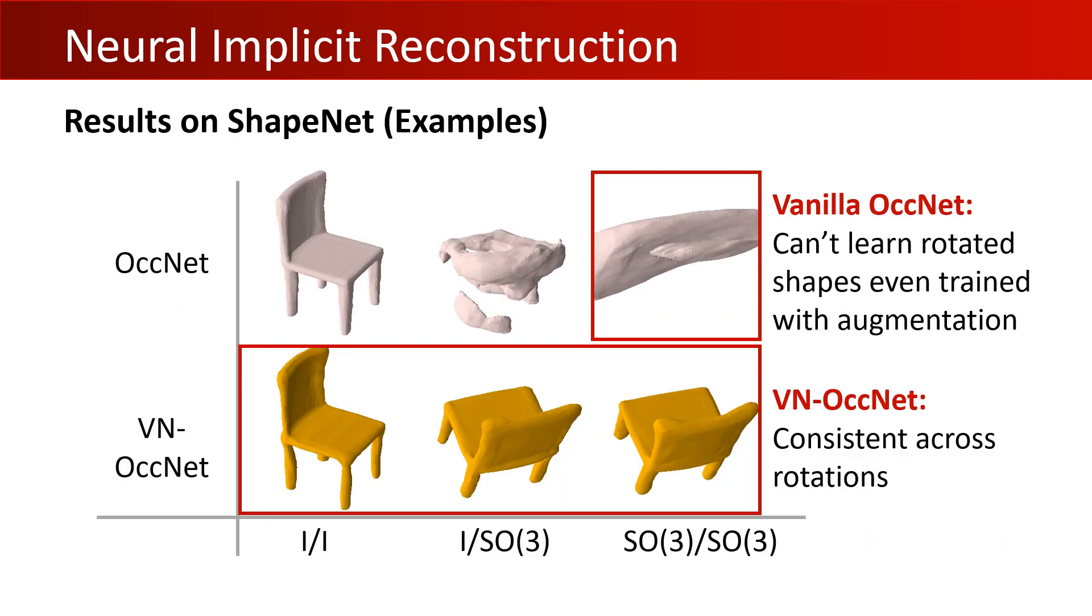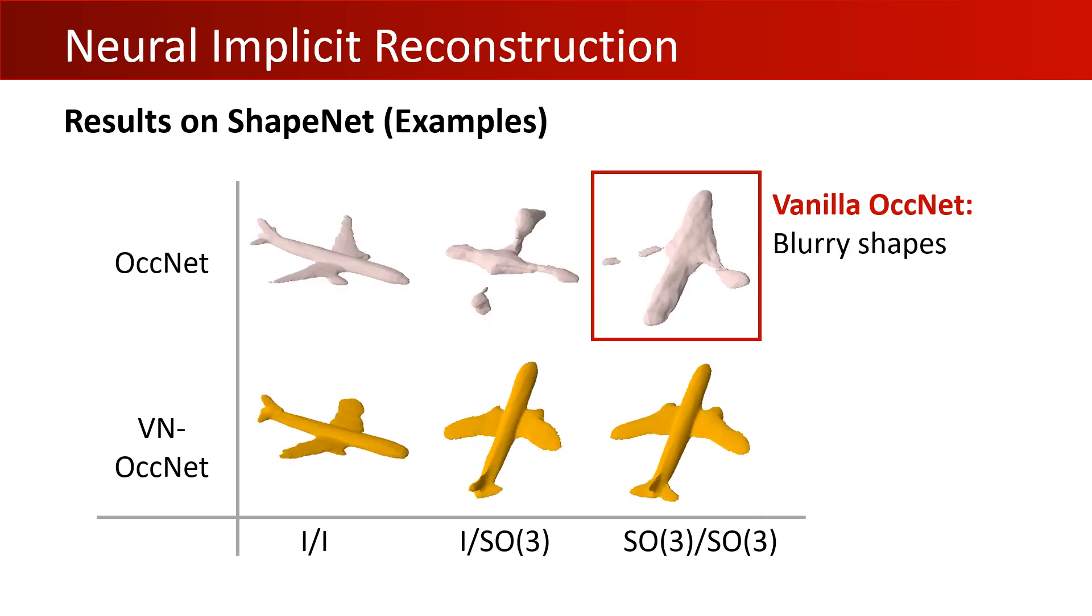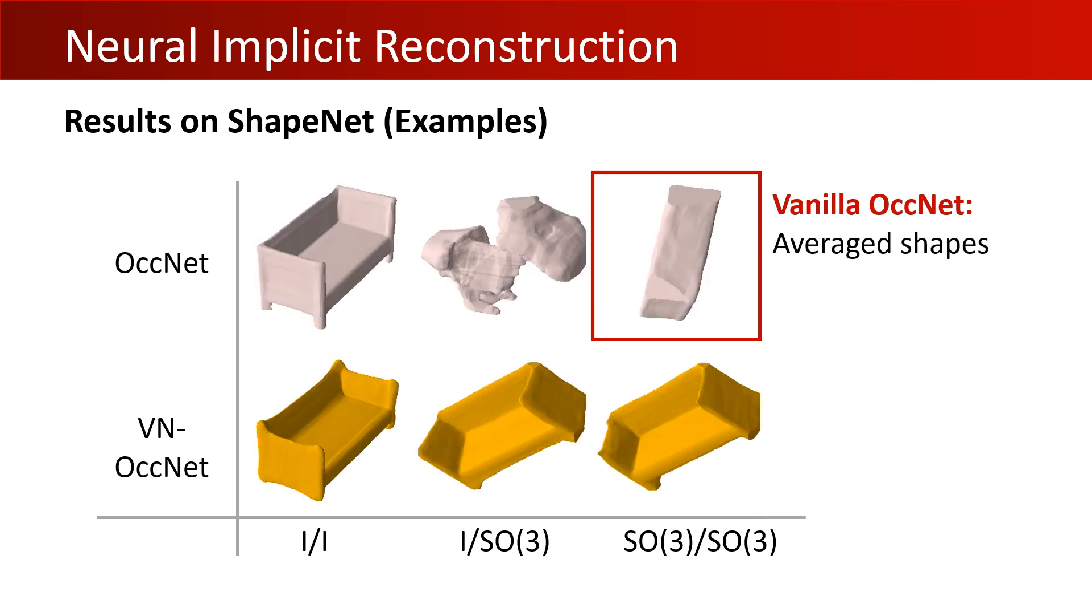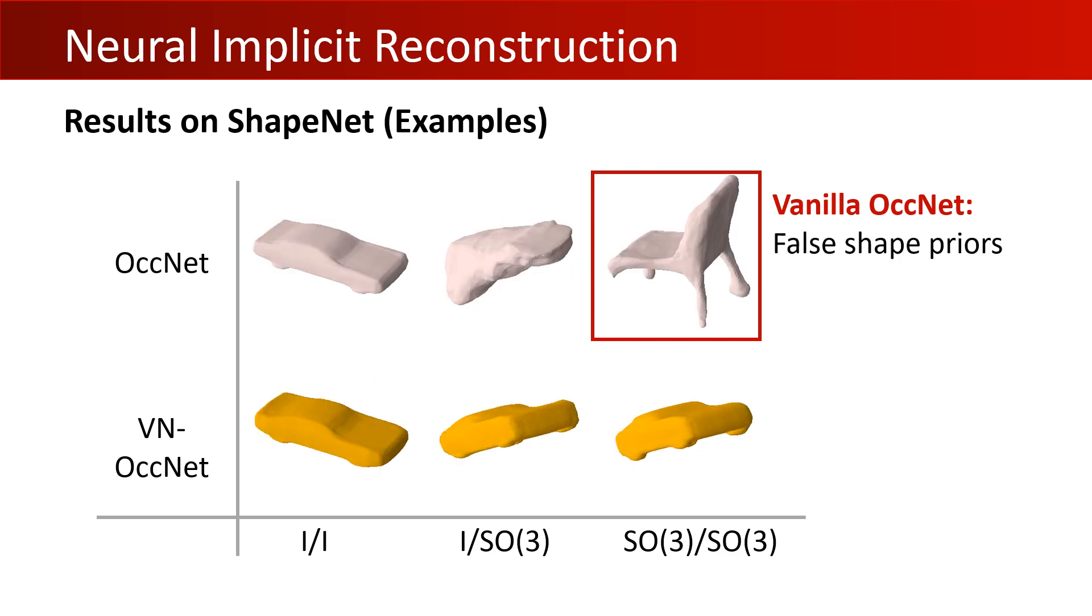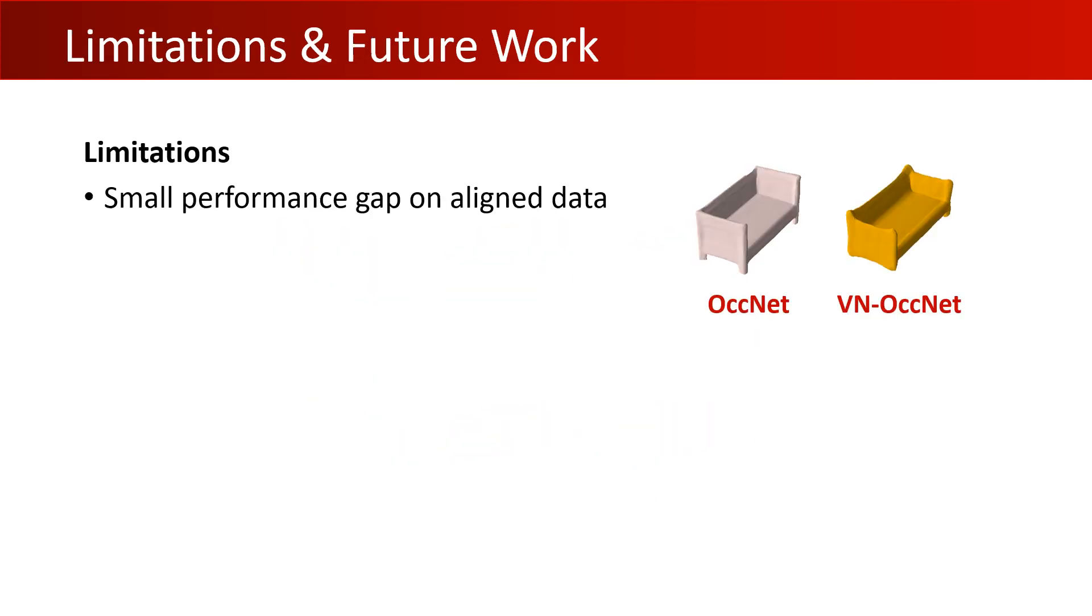Here are the visualizations. We can see that OccNet is extremely sensitive to rotations, where in the I/SO3 case, it totally fails. Even in the SO3/SO3 case, it still shows its limitation, but our VN-OccNet is stable across rotations. Here are more examples.